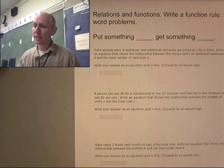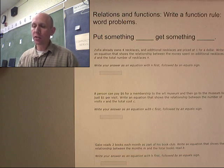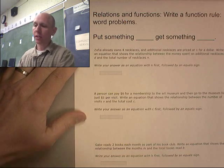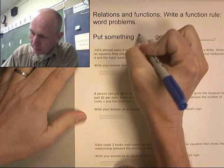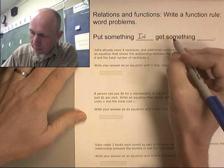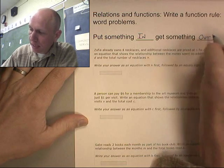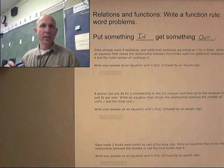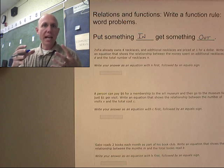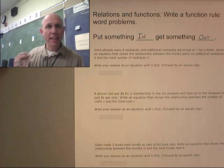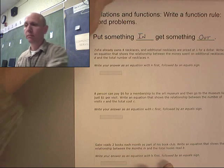I'm going to talk about relations and functions and how to write a function rule. The idea behind the function is that you're going to put something in and you're going to get something out. So this is a mathematical function where we're going to put a number into it, some math is going to happen to it, and a new number is going to come out of a function. And that's what we're going to try to build, but they're going to be word problems. Let's give this a shot.